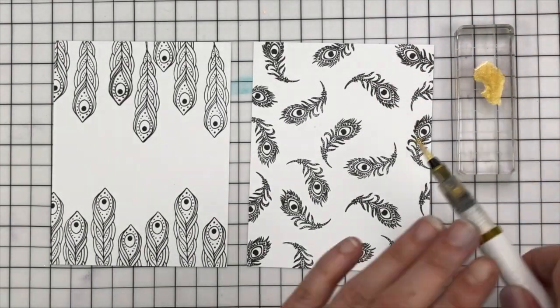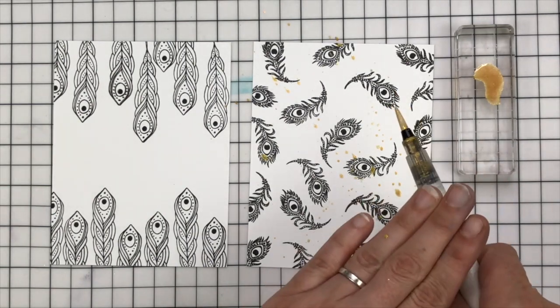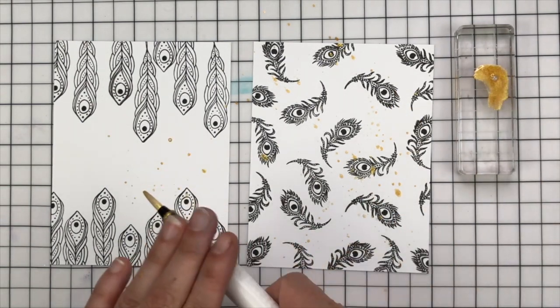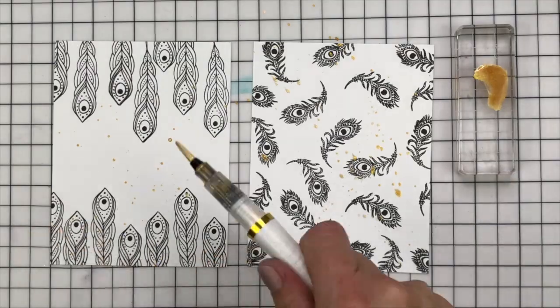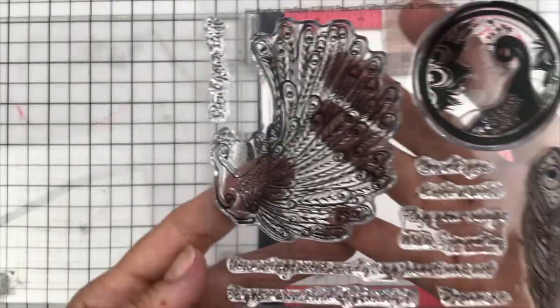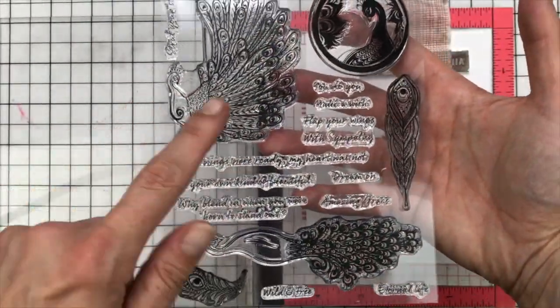Now I'm going to do one of my tricks here that I absolutely love to do. This is the Nuvo Shimmer Pen in Midas Touch and I like to squirt a little bit out on an acrylic block and then flick it out over the panel and then leave it to dry.